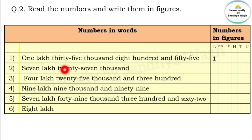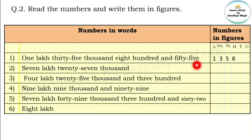Thousands: thirty five thousand, so thirty five thousand has three ten-thousands and five thousands — write 3 and 5. Then we have eight hundred, so write 8 in the hundreds place. Then fifty five — five tens and five units — write 5 in tens and 5 in units. Now let's put commas so we can read this number easily: 1,35,855.